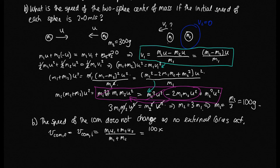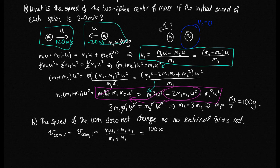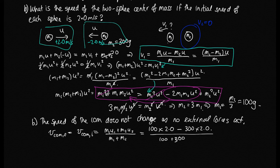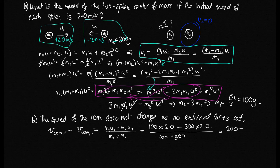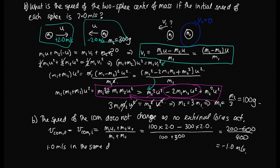The initial speed is 2 m/s but the spheres travel in opposite directions, so one is +2 and the other is −2 m/s. Substituting: V_cm = (100 × 2 + 300 × (−2)) / (100 + 300) = (200 − 600) / 400 = −400/400 = −1 m/s. The center of mass moves at 1 m/s in the same direction as the 300-gram sphere.